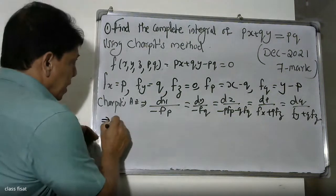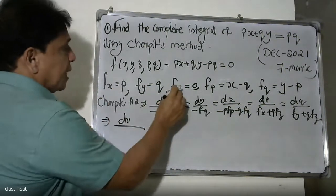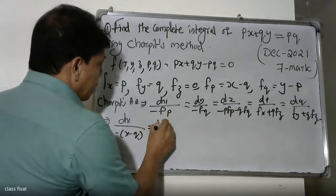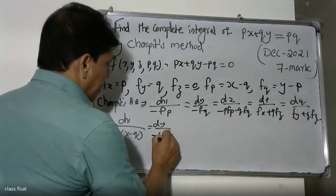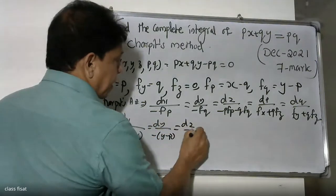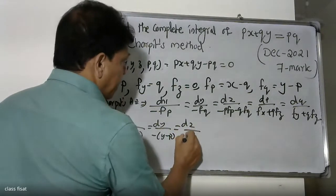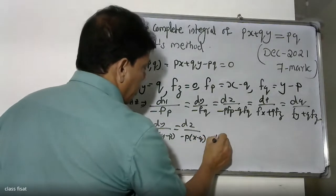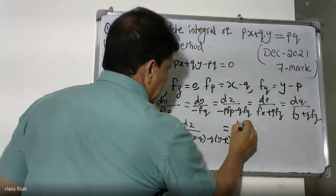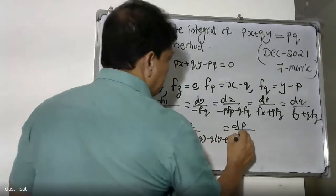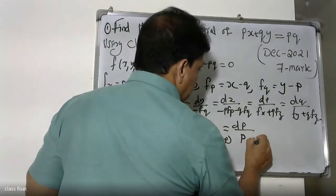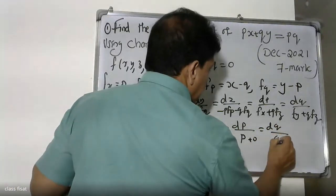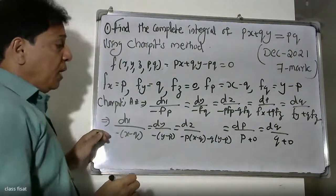Substituting the partial derivatives: dx divided by minus (x minus q), dy divided by minus (y minus p), dz by minus p times (x minus q) minus q times (y minus p), dp by fx plus p times fz equals zero, and dq by fy plus q times fz equals zero.